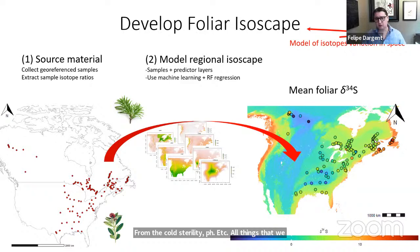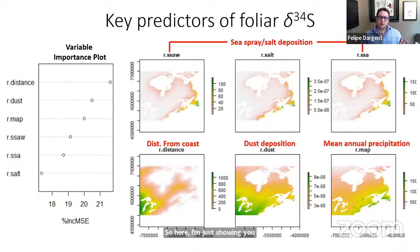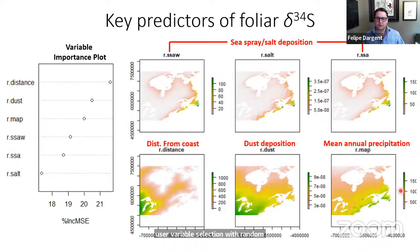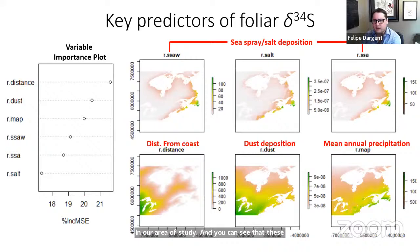To model the isoscape, we extract values from several predictor layers at sample coordinates. These predictor layers include geology, temperature, precipitation, salinity deposition, distance from the coast, aridity, and pH — all things we believe could influence sulfur. We use machine learning and random forest regressions with these variables to see how they influence δ34S values, generating a model of sulfur variation in space.